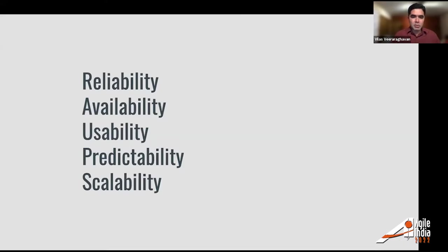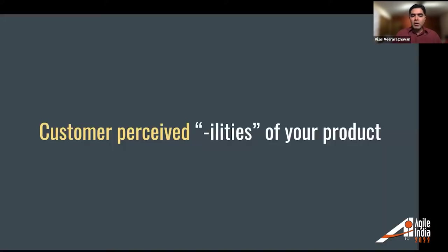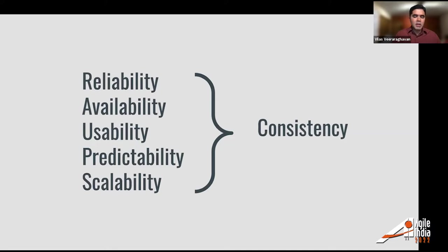I'm going to talk about five important aspects: reliability, availability, usability, predictability, and scalability. Reliability — is your service always available for the customer? That's availability. How easy is it to use? That's usability. Predictability means: can I at any given time confidently say I can use this function in this product? And finally, scalability — if a million people are logging into the site, will it stand up? We call these the customer-perceived 'illities' of your product.